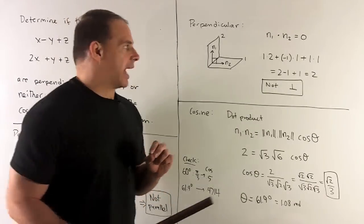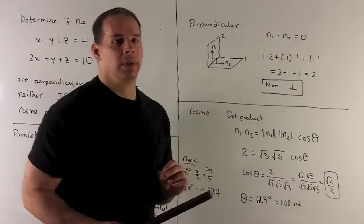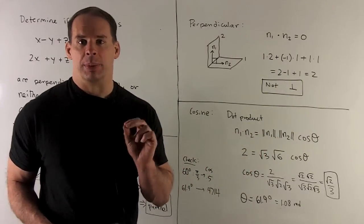I take n1, n2, we take the dot. So the idea is going to be take your coordinates, multiply them together, add, if you get 0, then perpendicular. In this case, what do we get? We get a 2 minus 1 plus 1 gives me a 2. So these are definitely not perpendicular planes.